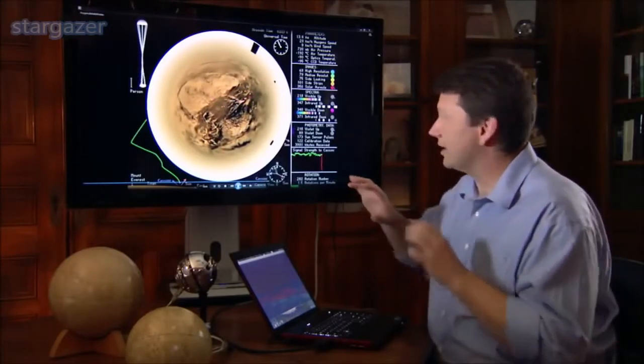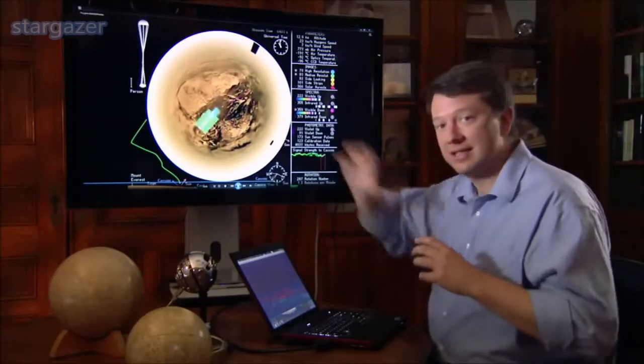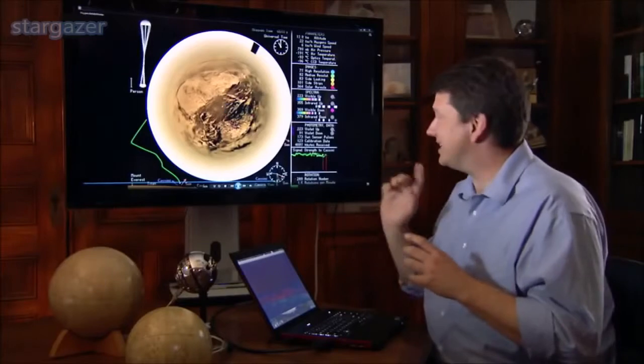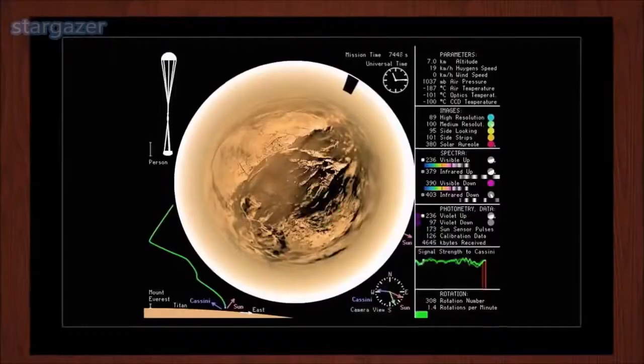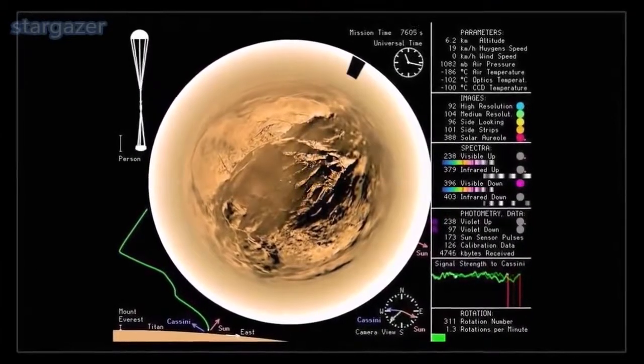We also are hearing a kind of hum in the background. It's the signal strength to the Cassini spacecraft. We've got a ticking that occurs that has to do with the spinning and rotation of the spacecraft. Every time it rotates once, they have the tick.